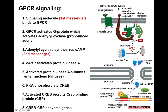The signaling molecule or first messenger binds to the GPCR — the signaling molecule is shown in red and the GPCR in green. The GPCR activates the G protein, which then activates adenyl cyclase. The adenyl cyclase synthesizes cyclic AMP, and cyclic AMP is called the second messenger. So the first messenger activates the GPCR, which causes a conformational change in the G protein, activating it, which in turn activates adenyl cyclase to synthesize cyclic AMP.